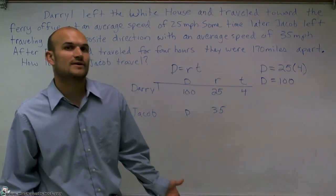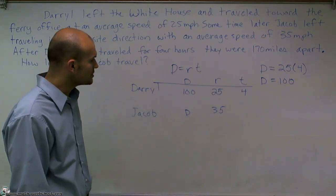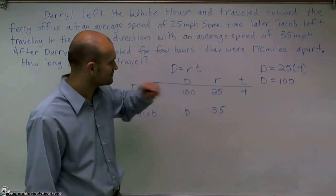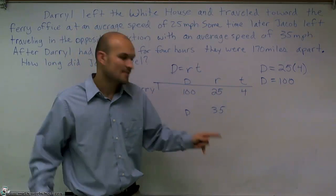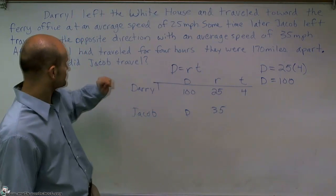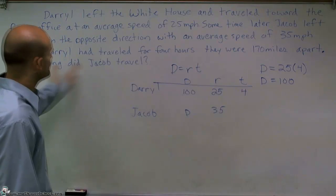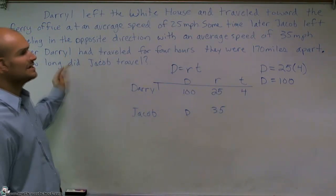However, what we need to figure out is we need to figure out what Jacob traveled. So what I'm going to do is when I'm looking at this, if Daryl traveled 100 miles and they're 170 miles apart, then how long did Jacob travel? We need to figure out the time, right? Not how far, we need to figure out how long.